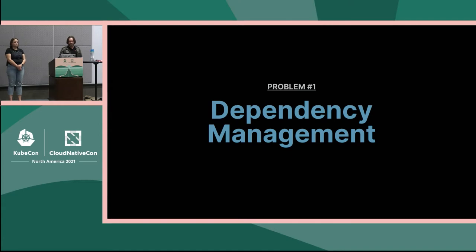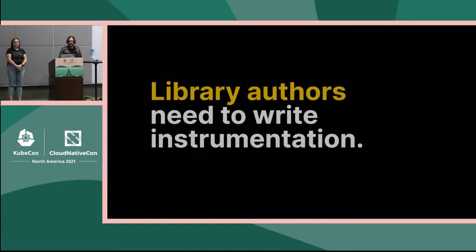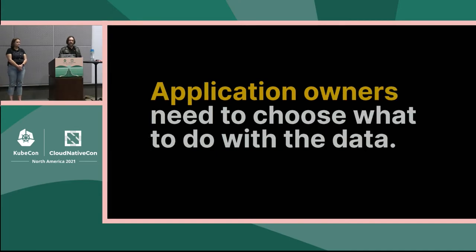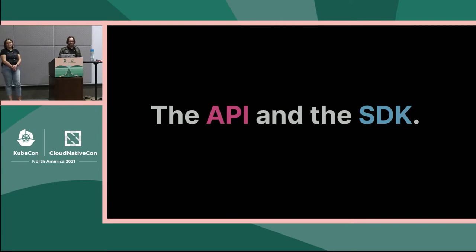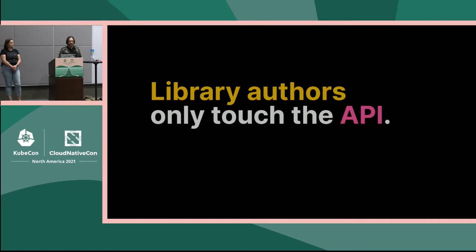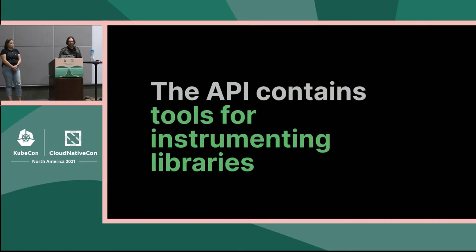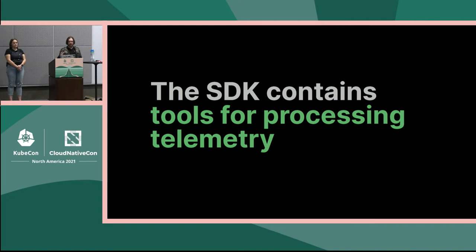The first problem is dependency management. By taking a separation of concerns, library authors only need to write the instrumentation, and application owners need to choose what to do with the data. We can decompose observability into these two pieces, which in OpenTelemetry we call the API and the SDK. Library authors only touch the API; application owners only touch the SDK. The API is a very thin layer of interfaces, while the SDK contains all the nuts and bolts for actually processing that telemetry and lets you send the data in any format to any place.